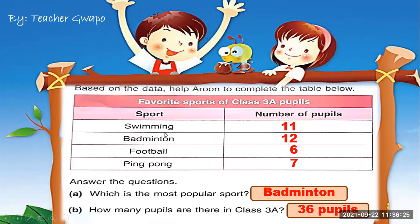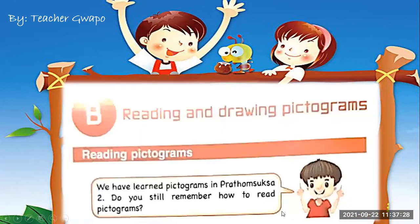From the notice board: 11 pupils like swimming, 12 like badminton, 6 like football, and 7 like ping pong. The most popular sport is badminton, with the biggest number at 12. To find the total number of pupils in Class 3A, we add: 11 + 12 + 6 + 7 = 36 pupils total.